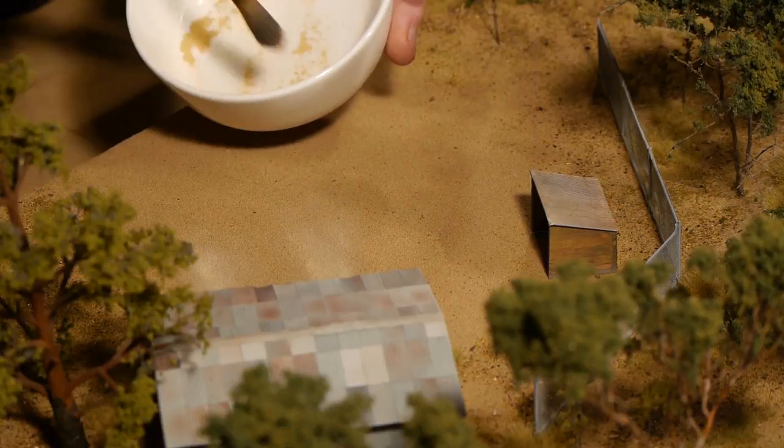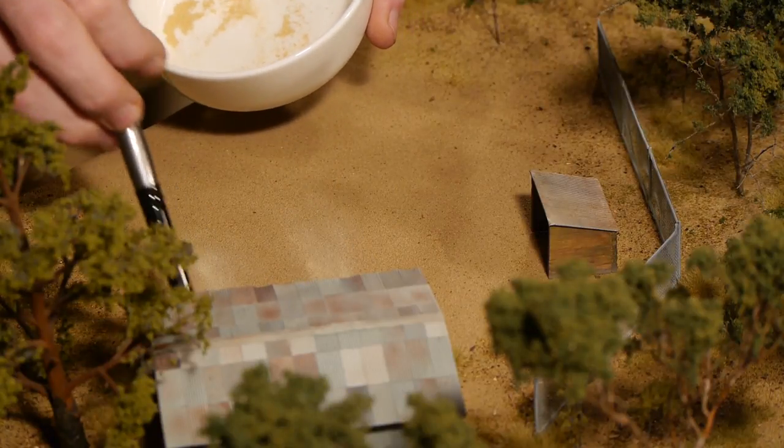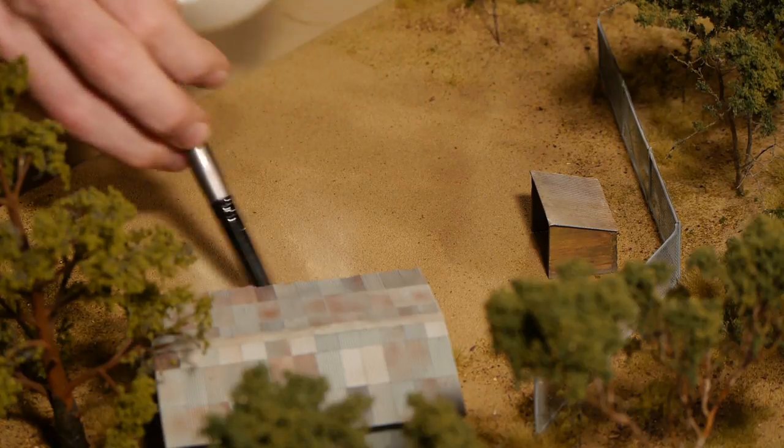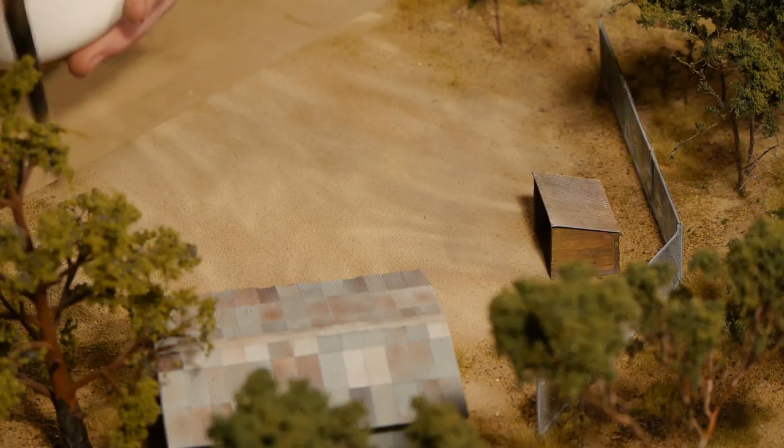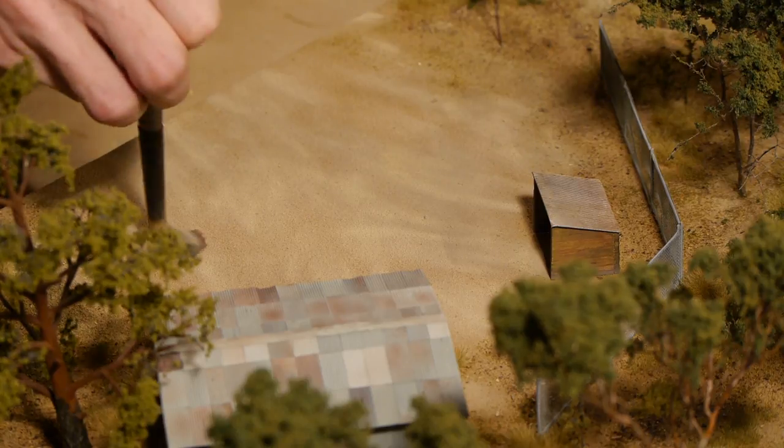And finally I'll highlight the driveway by dusting over some raw sienna pastels. I'm using a dry brush and randomly spreading it around. I try to have thicker spots to show tire marks and drag lines.